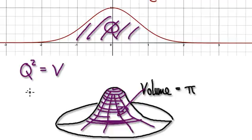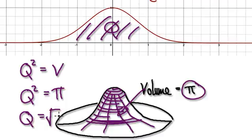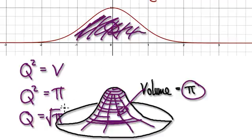The volume here is pi, so therefore Q equals the square root of pi. As it turns out, the area of this thing here equals the square root of pi.